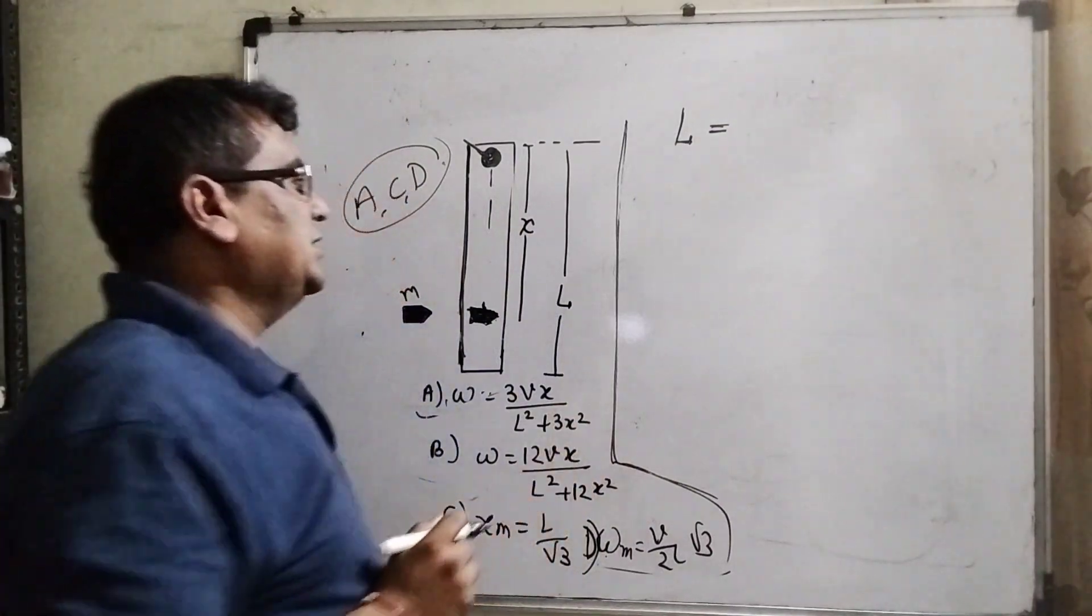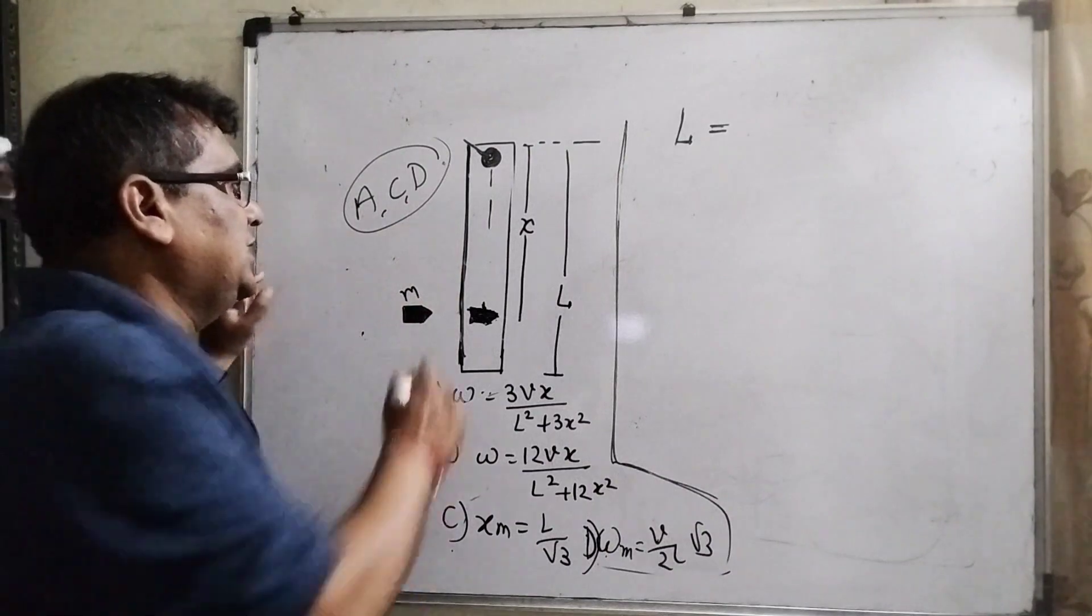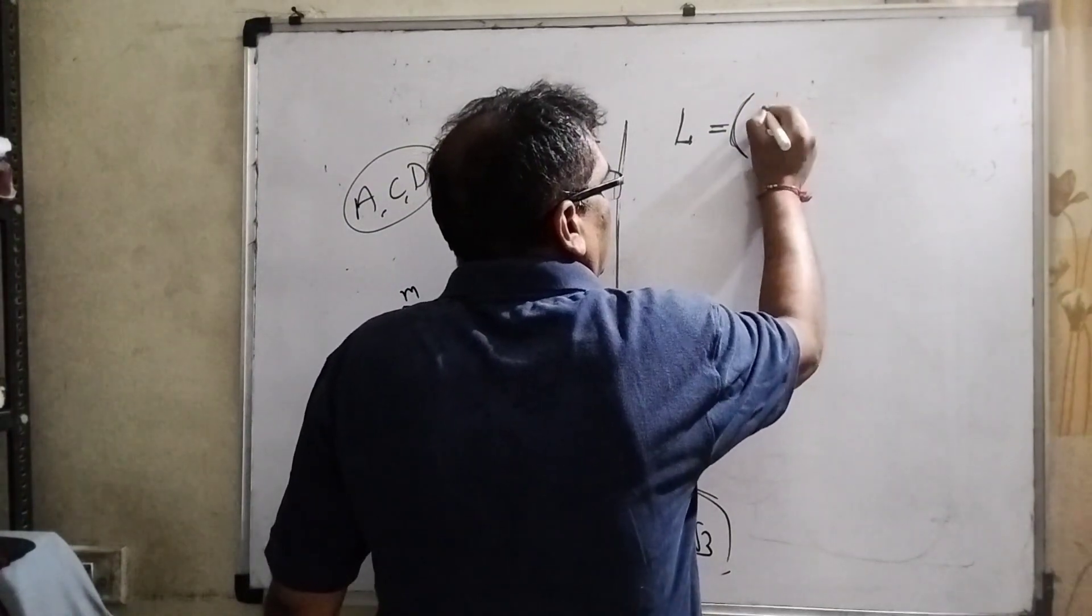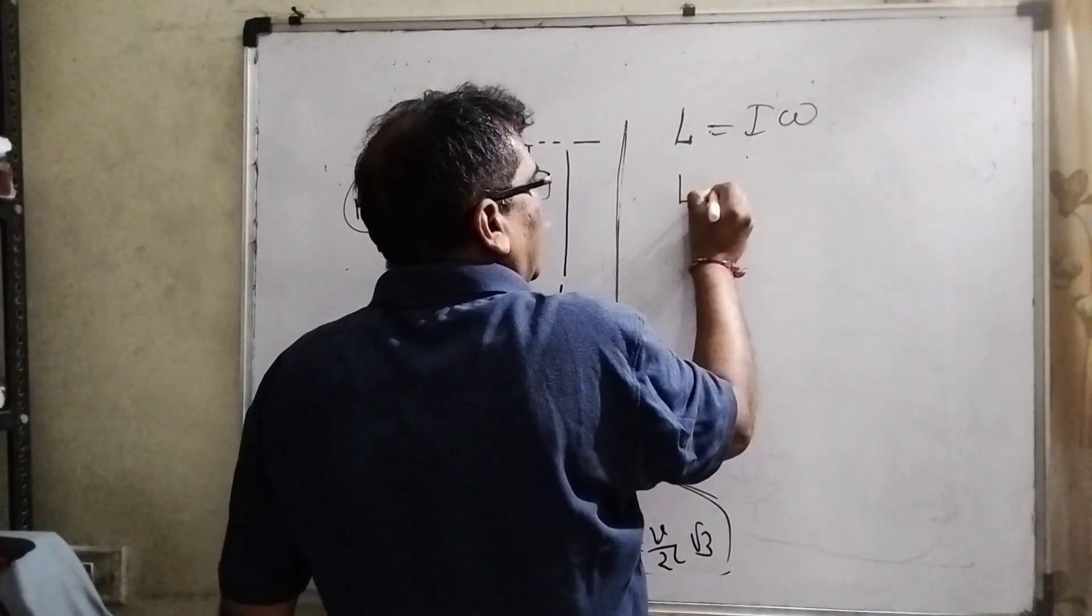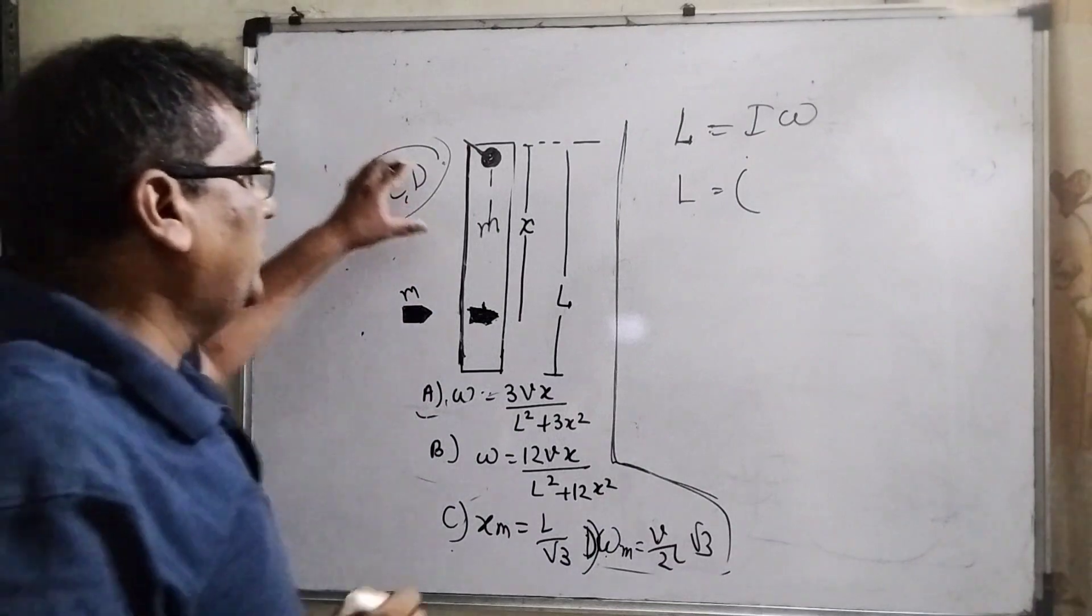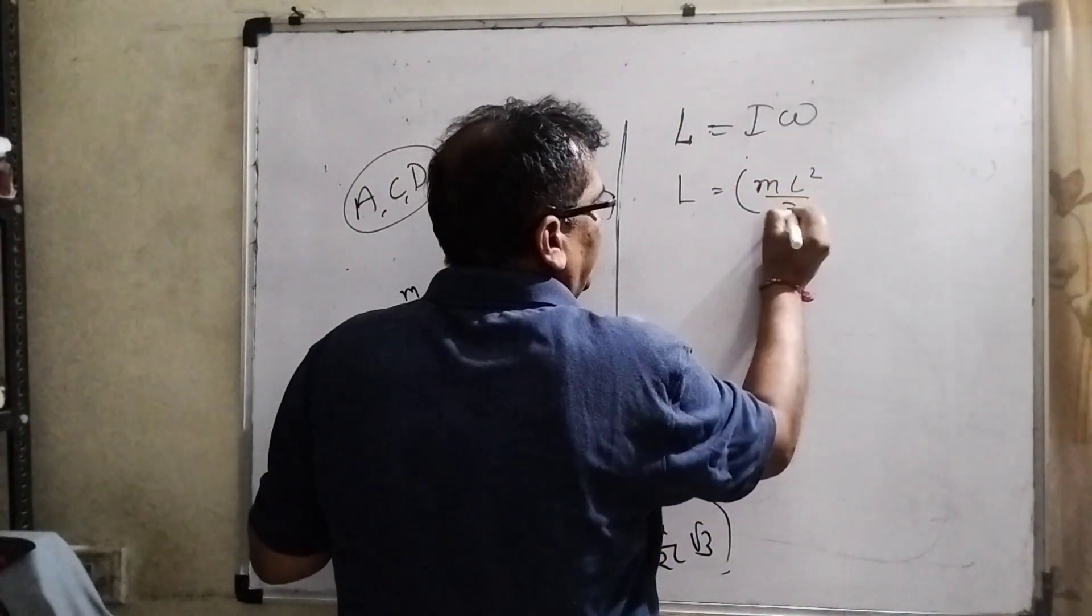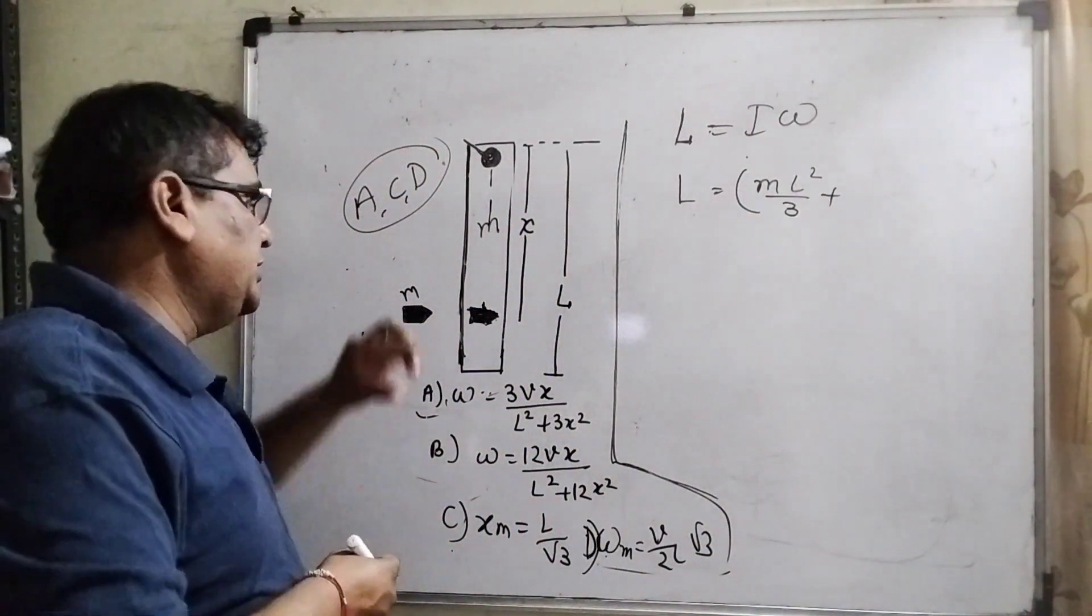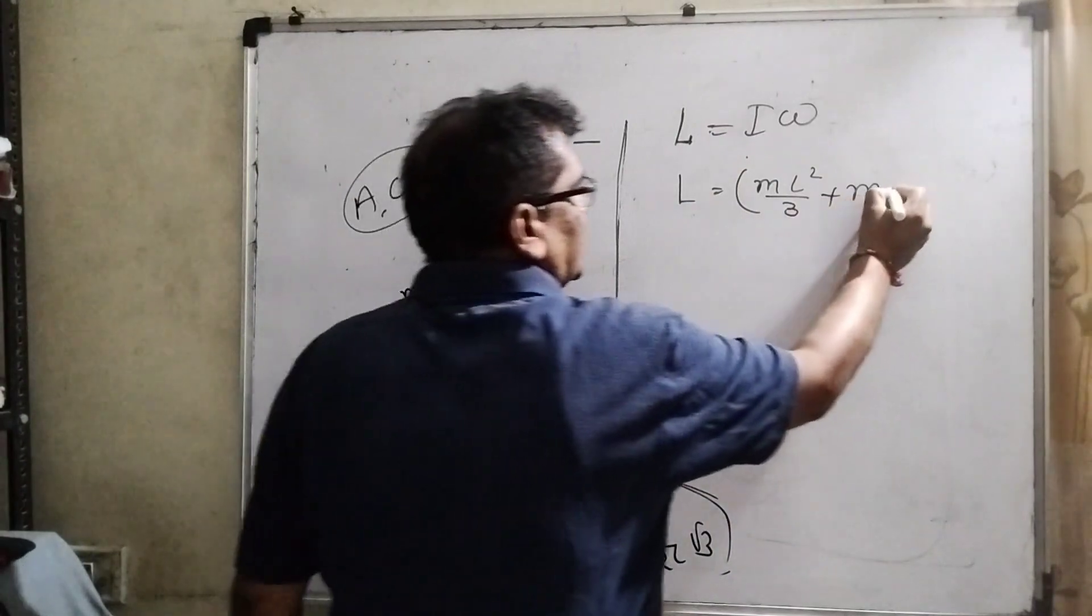Angular momentum of the system - the system means rod and this bullet. Here the mass, both masses are the same. Angular momentum L equals I omega, where I is the moment of inertia of the rod and bullet. What is the moment of inertia of the rod at the end? mL²/3. This is the moment of inertia of the rod, and moment of inertia of this bullet is m and the distance is x, means x². This is the total moment of inertia of the system.